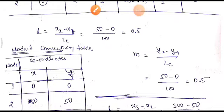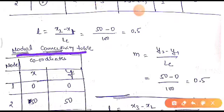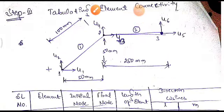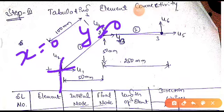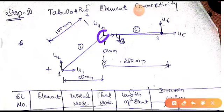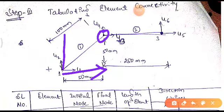First, we need to form the nodal connectivity table. Here we write the node coordinates, meaning x and y values. Node 1 is taken as the reference, so x = 0 and y = 0. For node 2, it is at a distance of 50 mm along the x-axis and 50 mm along the y-axis from the reference.